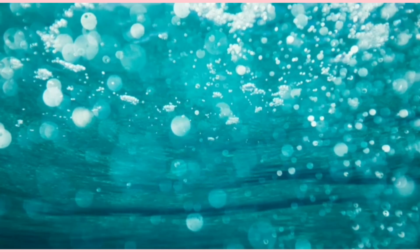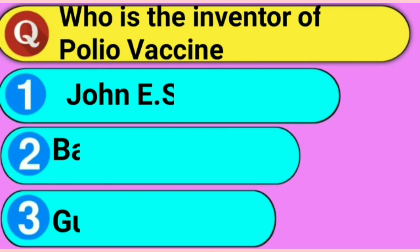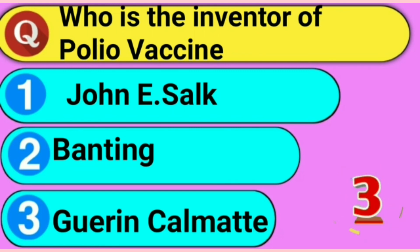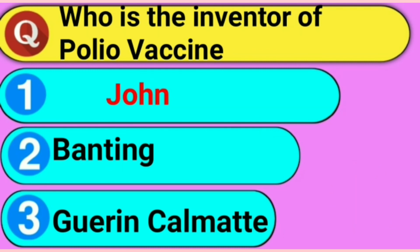Who is the inventor of polio vaccine? Your time starts now. Answer: Option 1, John E. Salk.